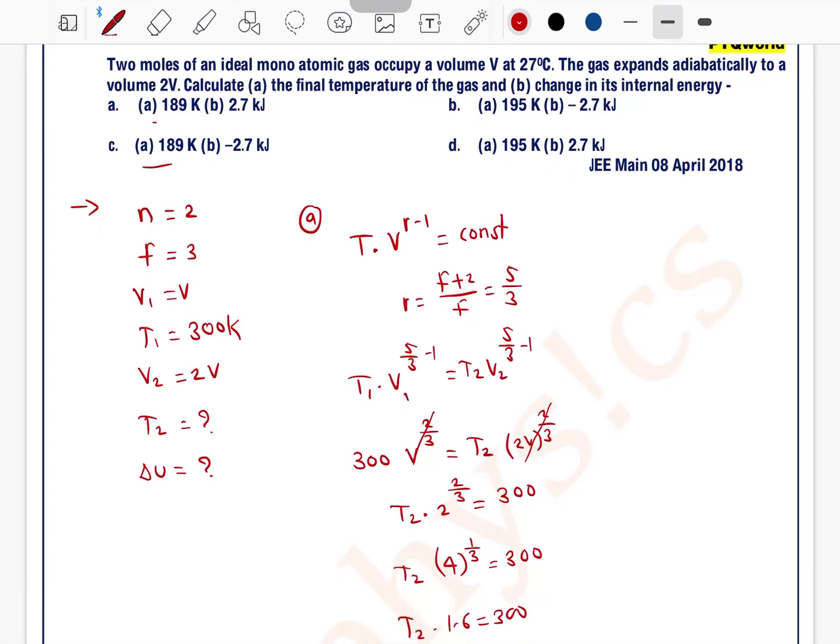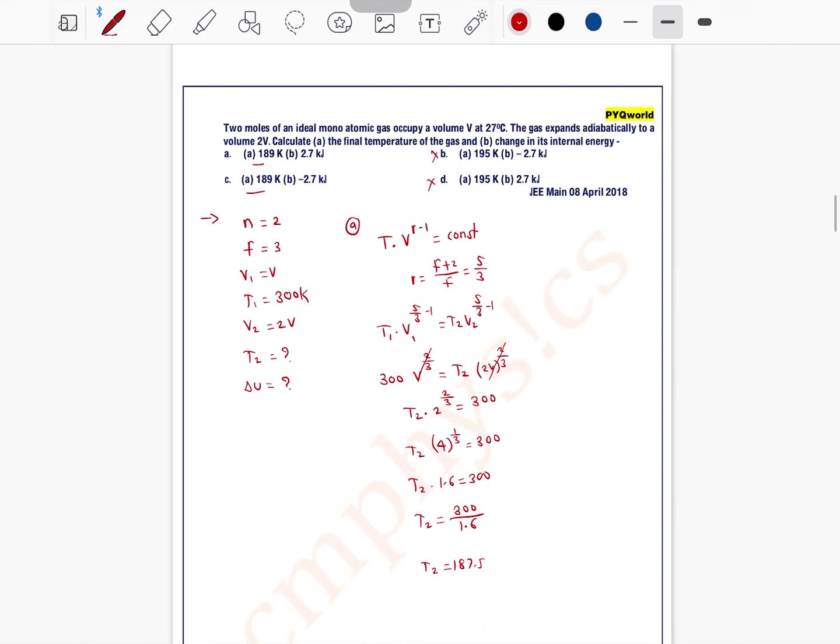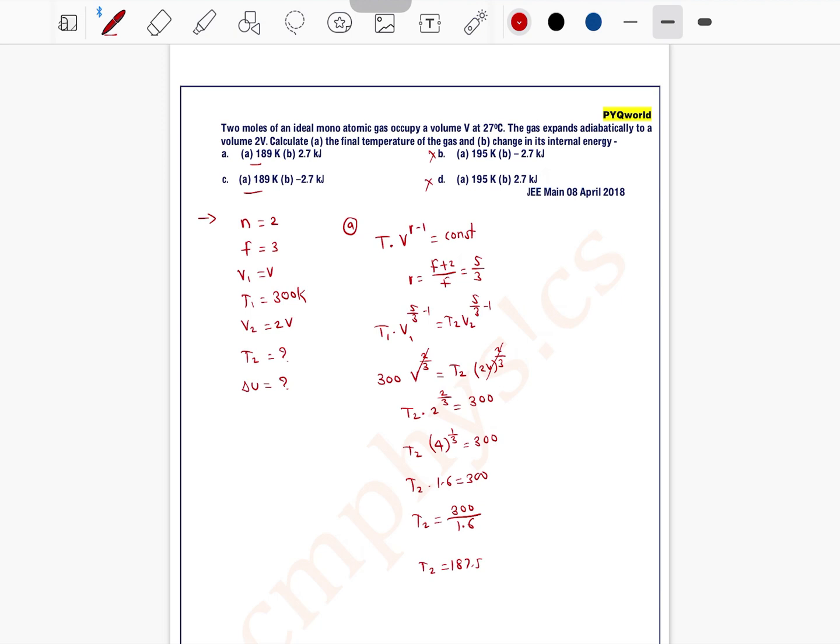And in case of change in internal energy, see one option is positive, second option is negative. We know that delta U is equal to n CV delta T.